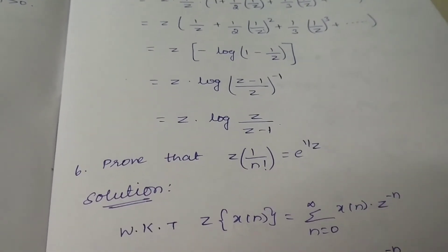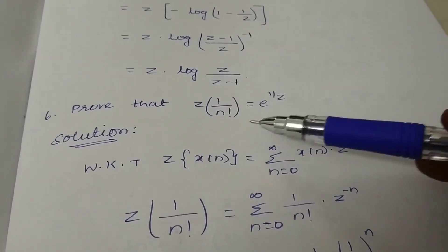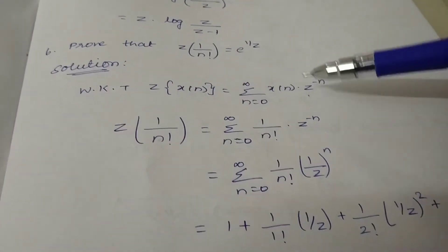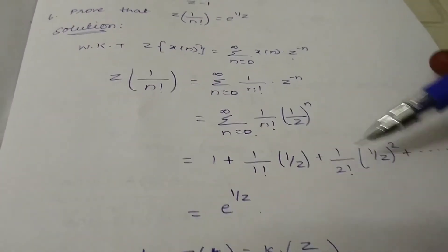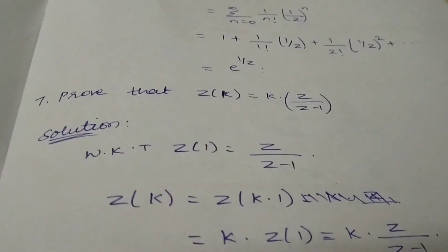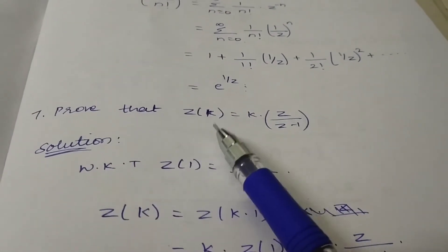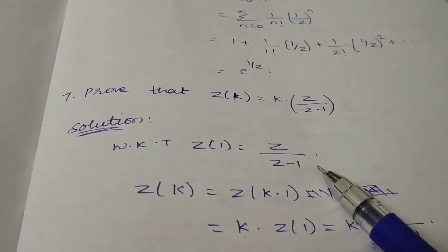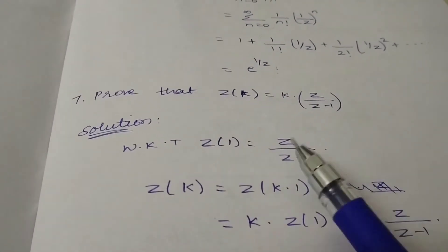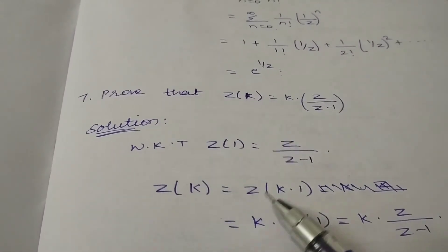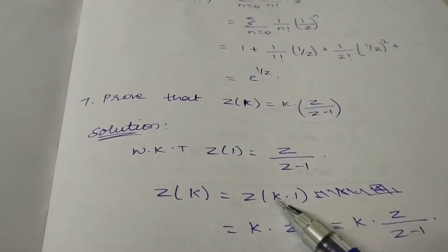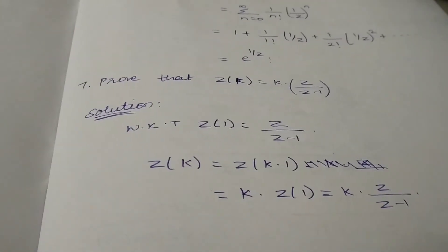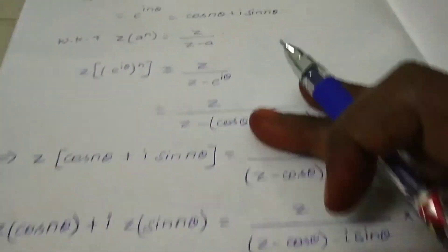Next: Z{1/n!} = e^(1/z). Apply the Z-transform formula, expand 1/n! using the e^x series: e^x = 1 + x/1! + x²/2! + etc. with x = 1/z. Proof gives e^(1/z). Also, Z{k} = k·z/(z-1), since k is a constant and Z{1} = z/(z-1), so Z{k} = k·Z{1} = k·z/(z-1).